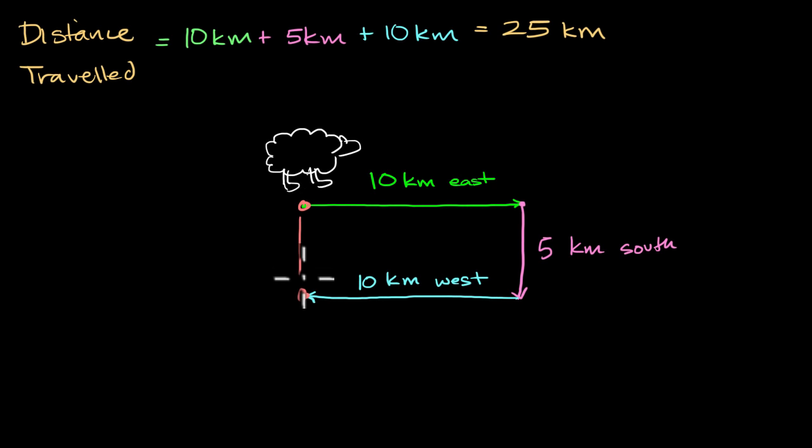From this point to this point would have been five kilometers south. It doesn't matter what it did along the way, what its path was. At the end of the day, it ended up five kilometers south of where it started out. And this would also be a valid way of saying how far it traveled. And this notion is known as displacement.